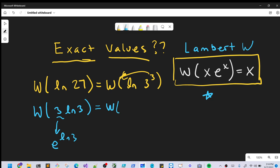So Lambert W of ln 3 times e to the ln 3. Notice now we have our same coefficient and exponent like our formula over here, and so this is just going to be ln 3.